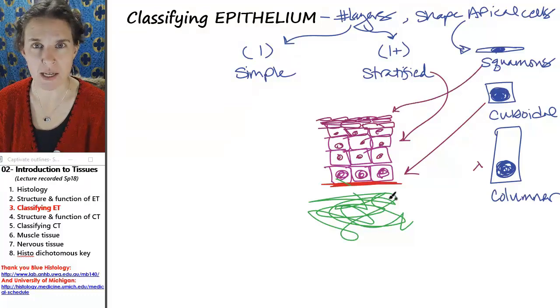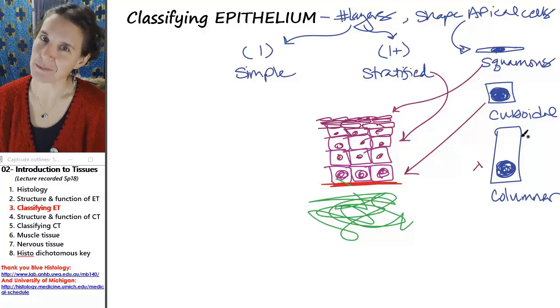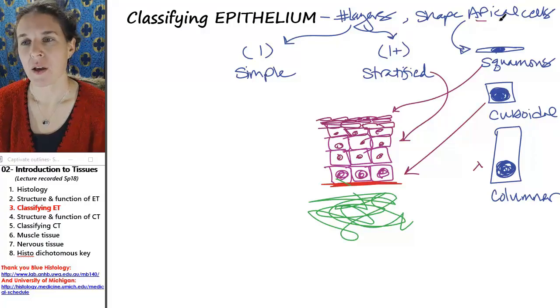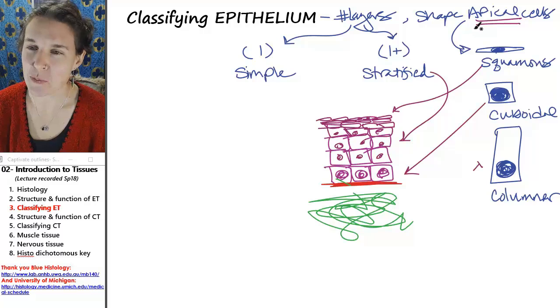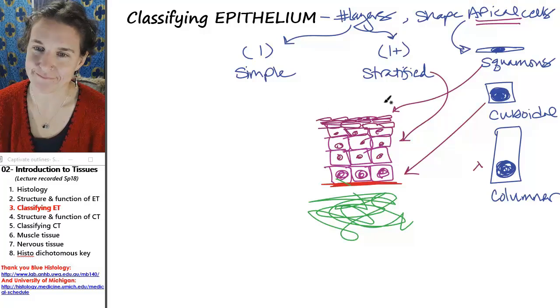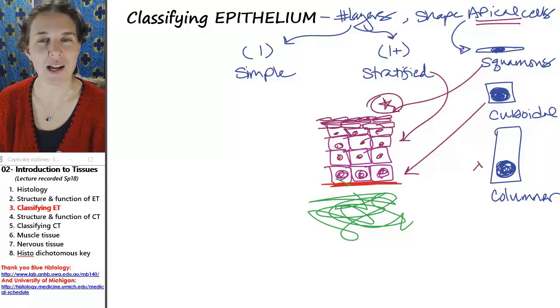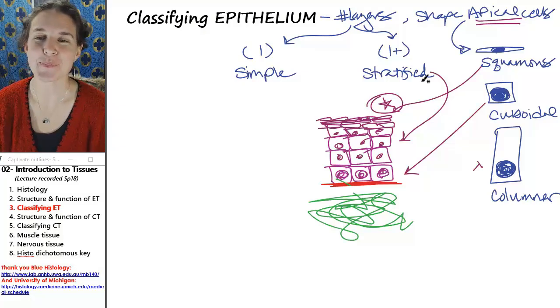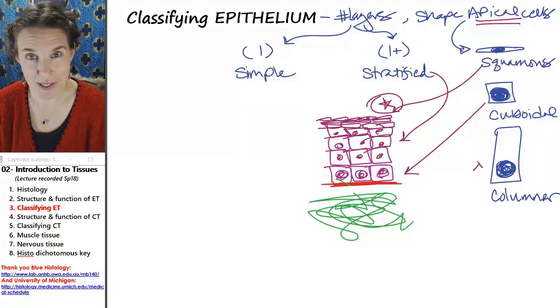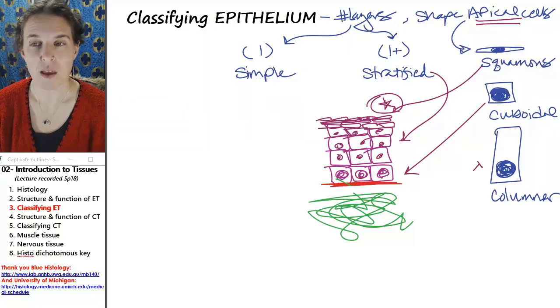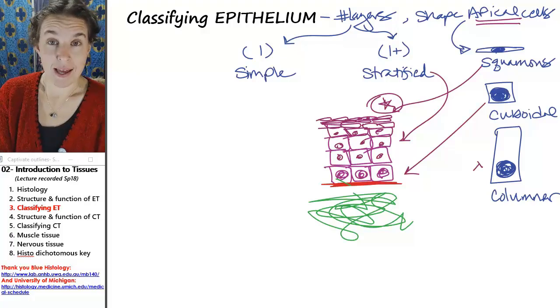How do you know which one it is? It's stratified something, something. Where is my apical edge, my friends? So what kind of tissue am I talking about? Stratified squamous epithelium. It's that straightforward.